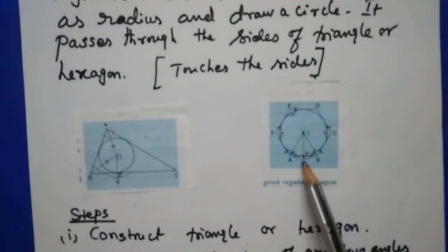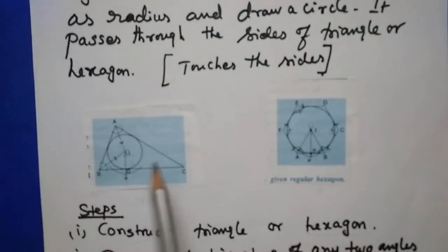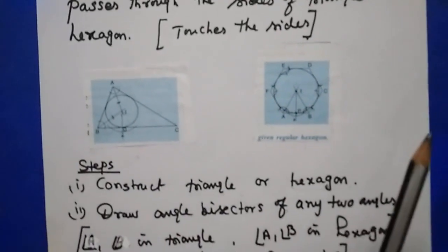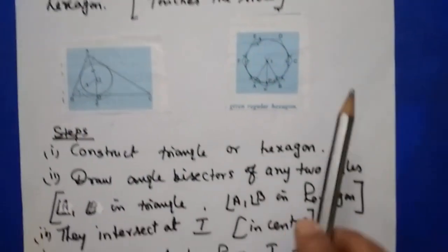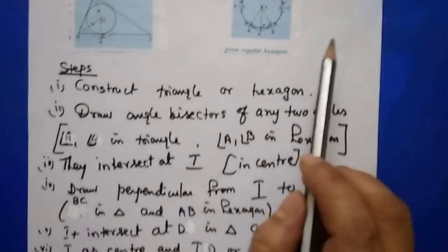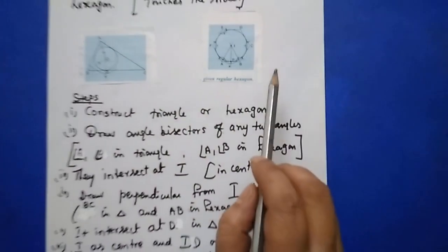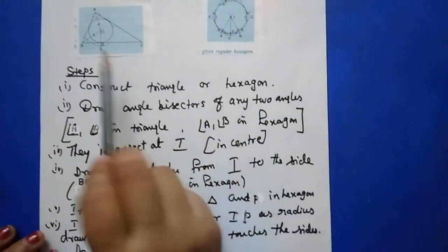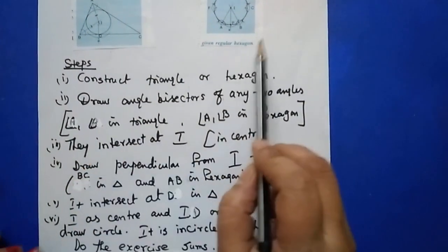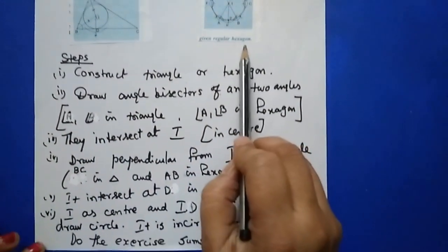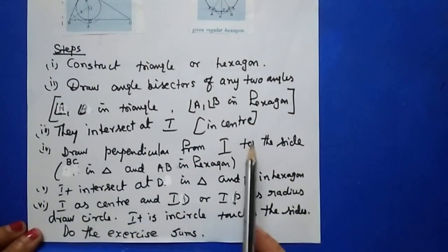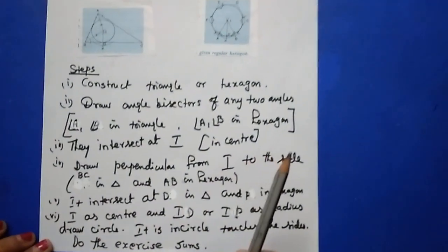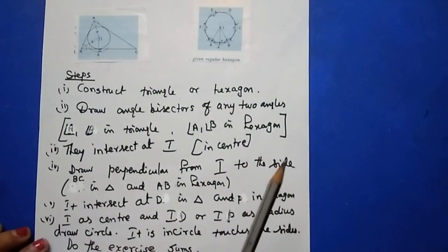ID or IP is the radius of the incircle. This completes the four constructions: tangent from external point, tangent through a point on the circle, incircle, and circumcircle. Do practice the exercise sums, verify and complete the exercise.